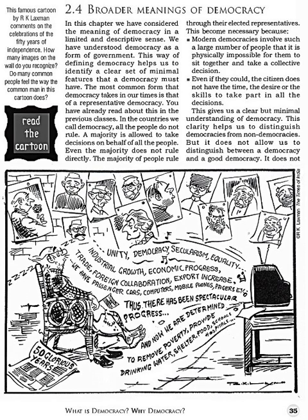The most common form that democracy takes in our times is that of representative democracy. In democratic countries, all the people do not rule. A majority is allowed to take decisions on behalf of all the people, and even the majority does not rule directly — the majority of the people rule through their elected representatives.